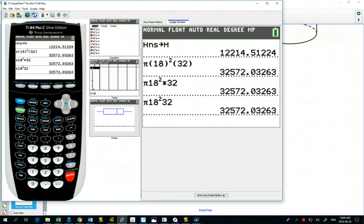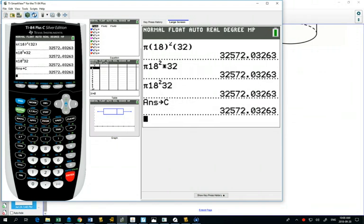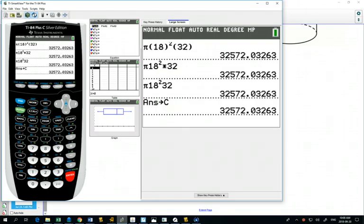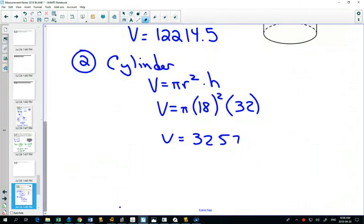32,527. And then I'm going to store this one as C for my cylinder. Showing my work, volume 32,572.